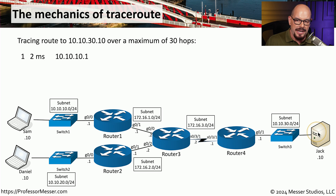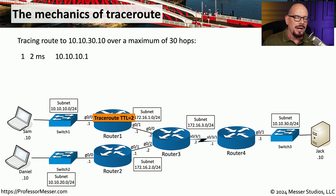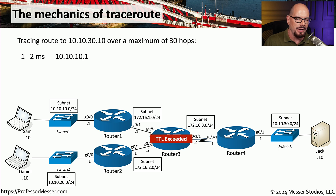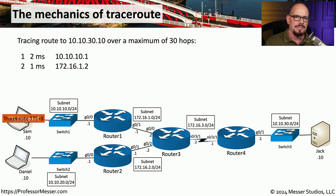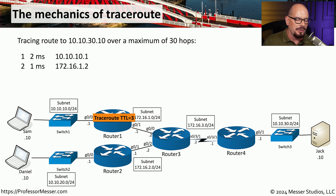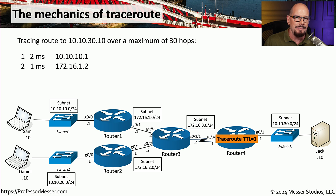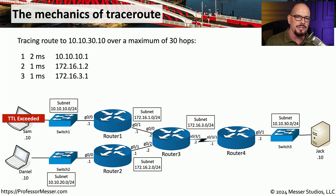Next, Sam sends a traceroute with TTL set to two. The packet reaches router one, which decreases the TTL by one, then passes to the next router which also decreases TTL to zero — TTL exceeded again, and that message goes back to Sam's workstation. This process continues: traceroute changes TTL to three, passes through the first router (decreased to two), the second router (decreased to one), the third hop (decreased to zero), TTL exceeded again, and a message is sent back. The TTL increments until the packet finally reaches the destination.